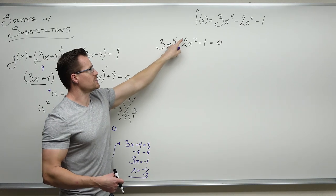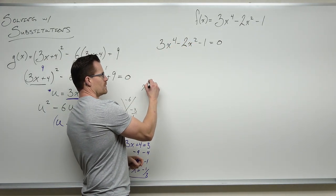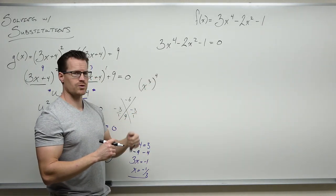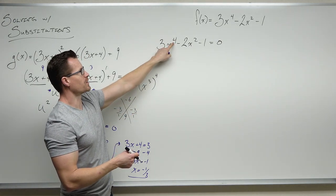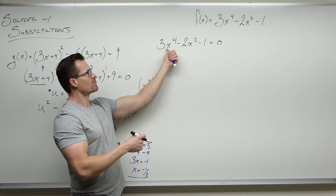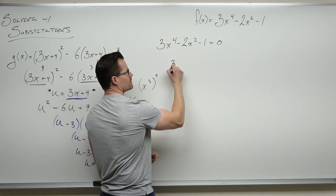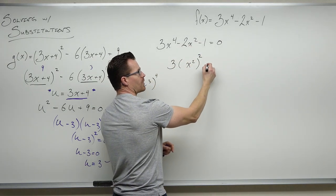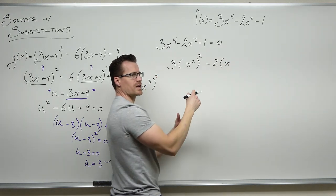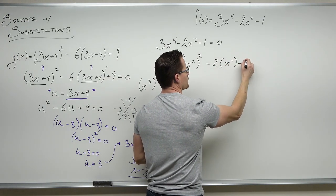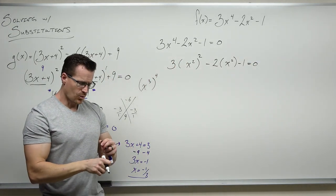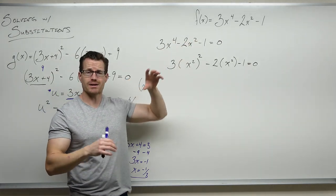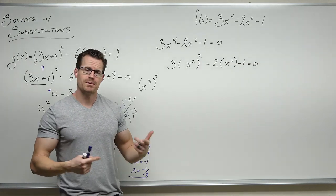Here's how to tell when a substitution is going to work: look at your first exponent and your second exponent. If the first exponent is two times the second one, your substitution is going to work. The reason is that exponents raised to exponents is a multiplication concept — x cubed to the fourth is x to the twelfth. So if the first exponent is two times the second, we can write the first term as the middle term raised to the second power.